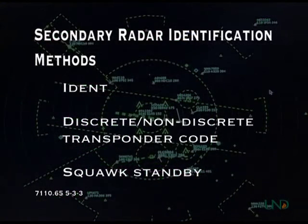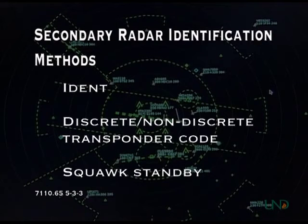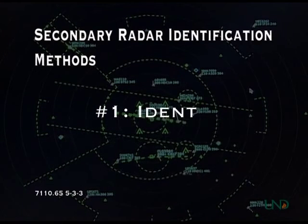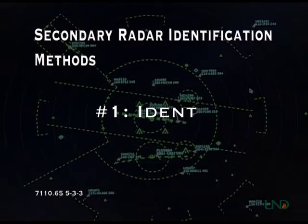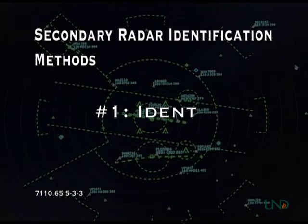In addition to the three primary radar identification methods, there are also three secondary, or beacon, methods. The first method involves asking the aircraft to ident. The pilot will activate the ident feature on the aircraft transponder, and the target will begin to blink on the radar scope.